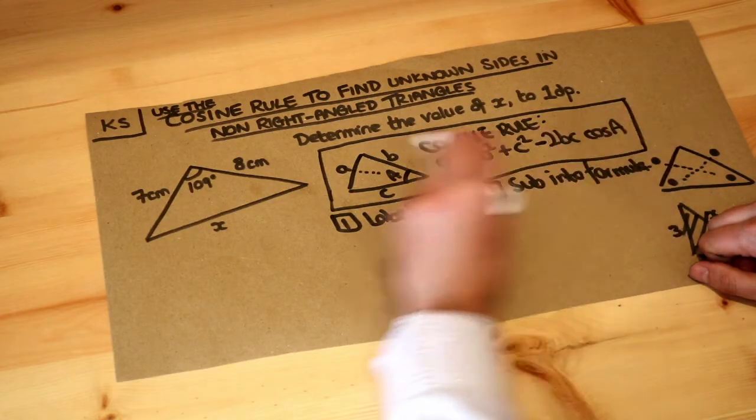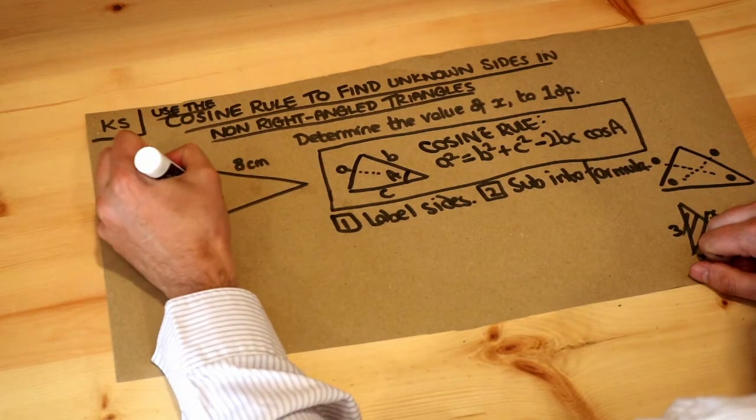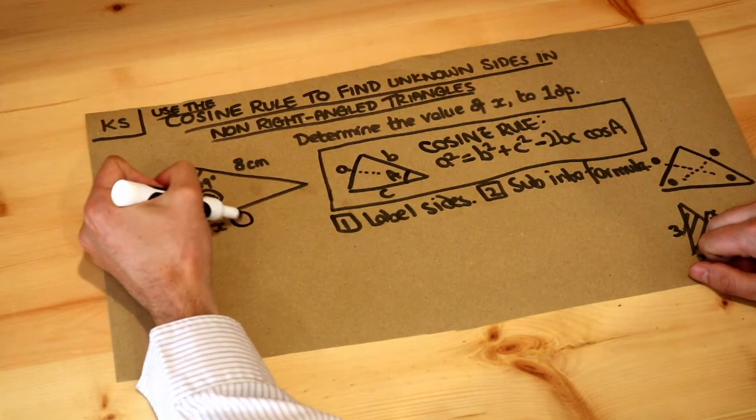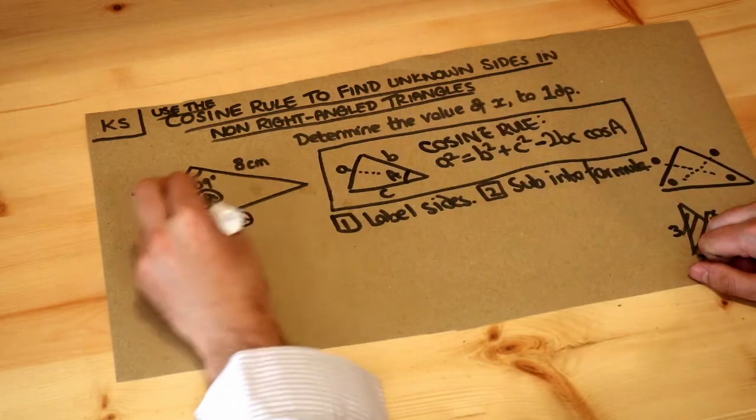Well, there's only one capital letter here, it's the capital A, so that is the angle there we're going to label as capital A. And remember, we always label the opposite side as the lowercase version of that letter, so little a.